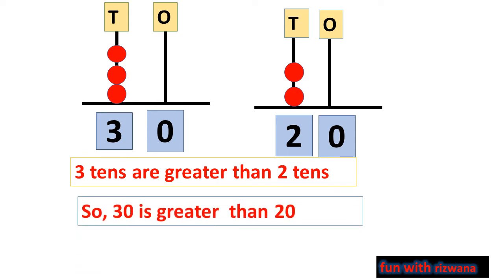So, 30 is greater than 20 because the ones are the same on both sides. 30 is greater than 20. And we write it as 30 is greater than 20.